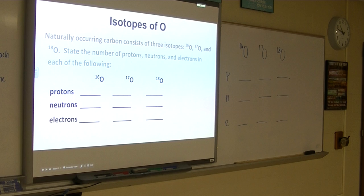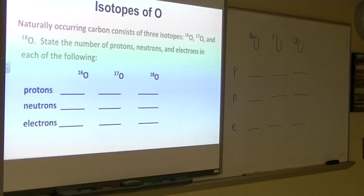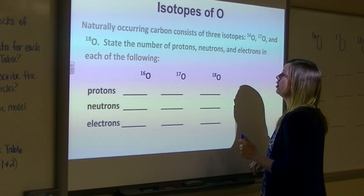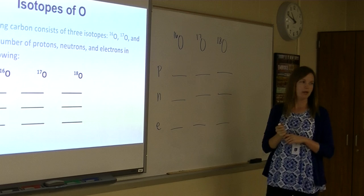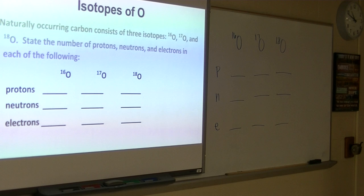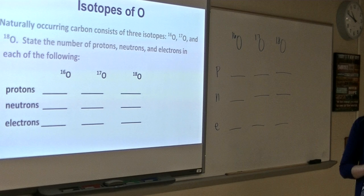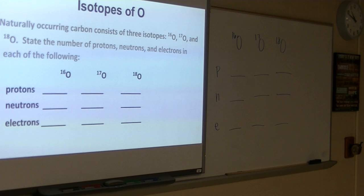So I want you to write this down. Okay, so this should say oxygen. Naturally occurring oxygen consists of three isotopes, 16, 17, and 18. State the number of protons, neutrons, and electrons in each of the following. So we're going to work through this together. We're going to find the number of protons for each one, find the number of electrons and the neutrons. So I want you to take a look at your periodic table and find oxygen for me.